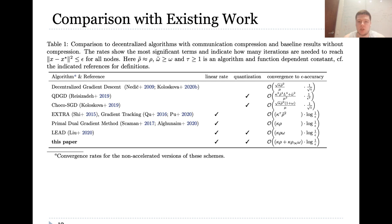This table compares our algorithm with existing work. Overall, there is only one existing algorithm which is both linearly convergent and uses compressed communication, but it has worse rate than ours. Thank you for your attention.